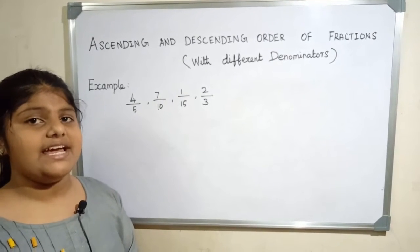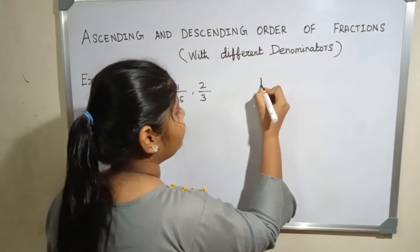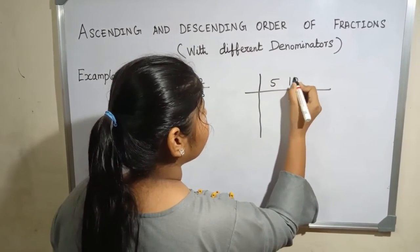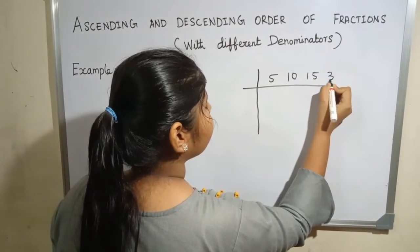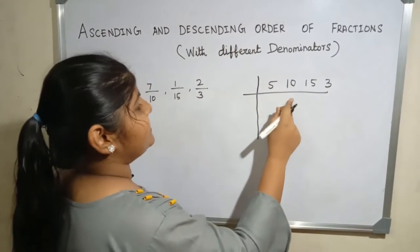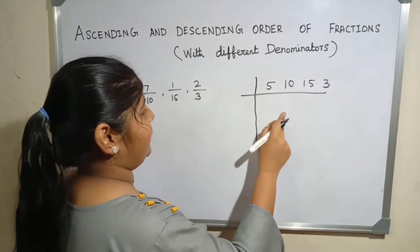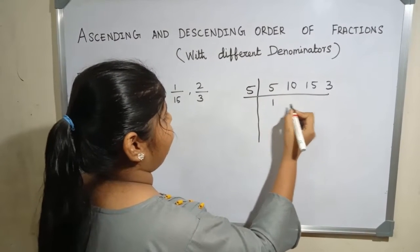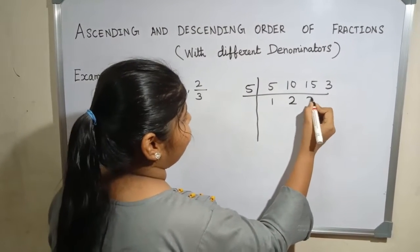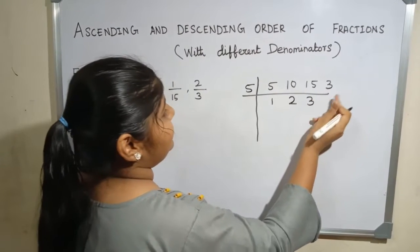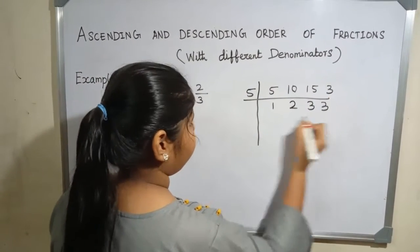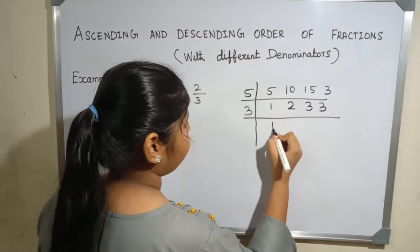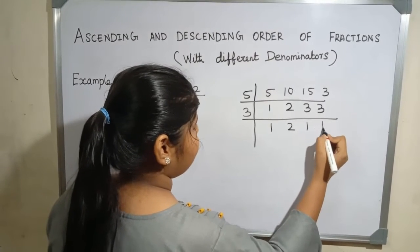5, 10, and 15 are divisible by 5. So we will take 5. 5 1s are 5, 5 2s are 10, 5 3s are 15, 3 will come as it is. Next, we will take number 3. 3 1s are 3, 3 1s are 3.